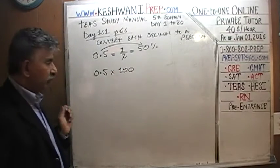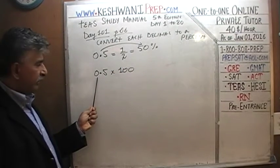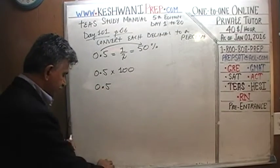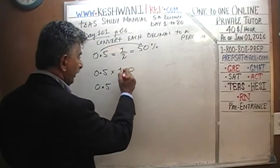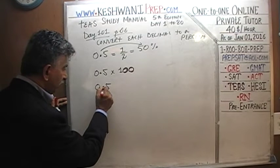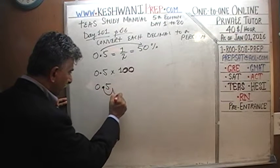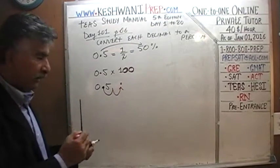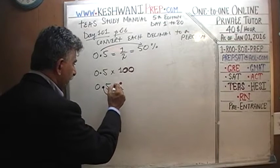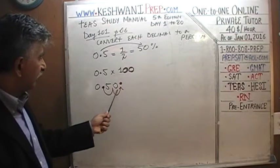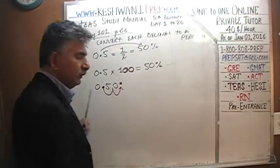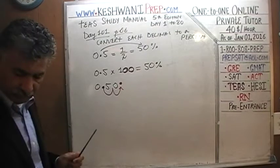To convert a decimal to a percentage, we multiply it by 100. Because 100 has two zeros, we move the decimal point two places to the right. Here: 0.5 — move the decimal two places to the right — and fill the empty spot with a zero. So 0.5 becomes 50 percent.